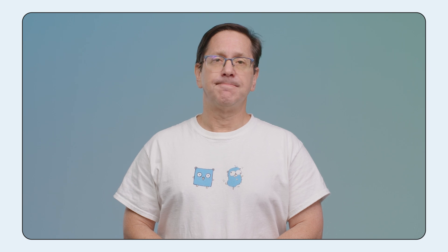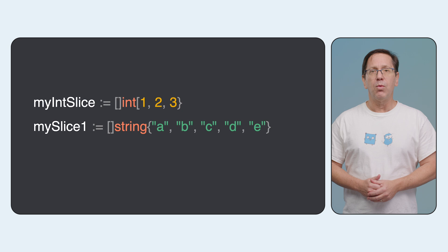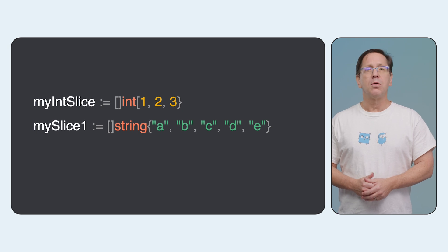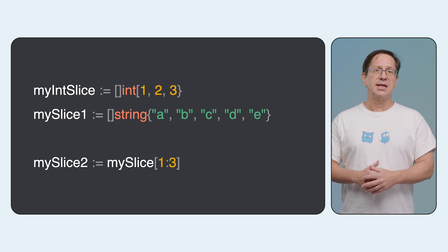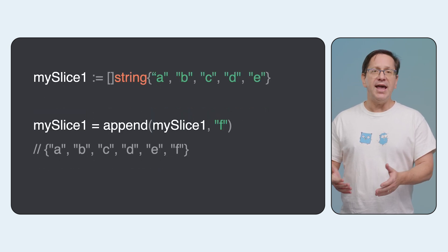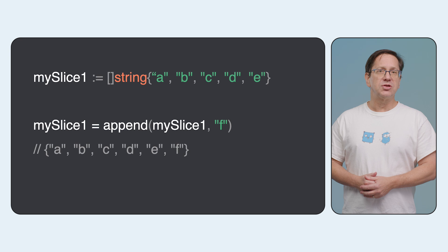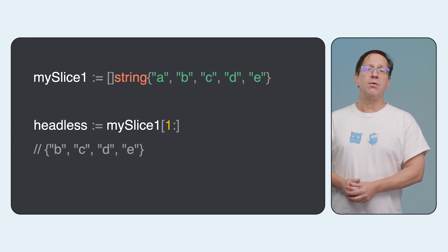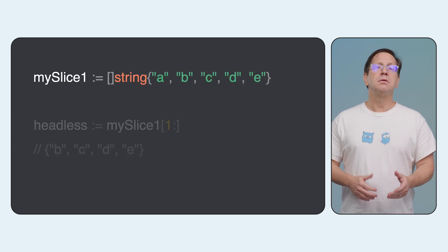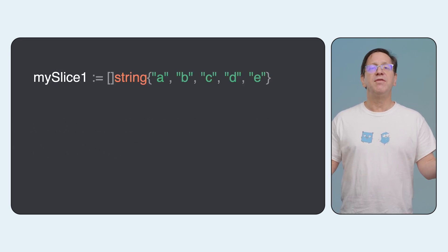For those sort of operations, you need a slice. A slice is a dynamically sized view — or a slice — of an array. You can create one from a literal or from an existing slice or array. Once you've got a handle on one, you can append new values to the end, or re-slice if you don't need the value at the front, the back, or even the middle.